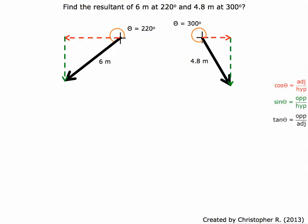Here's another example of adding component totals, or finding component totals. We have two vectors here. Six meters at 220 degrees. We go starting on the x-axis and go all the way around — 90, 180, 220 — so that's where we put the six-meter line.